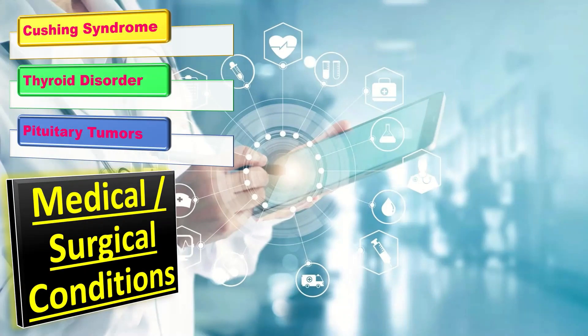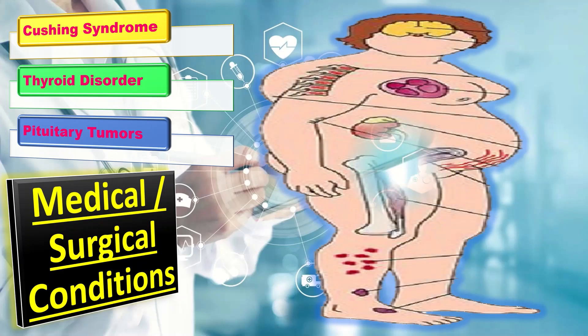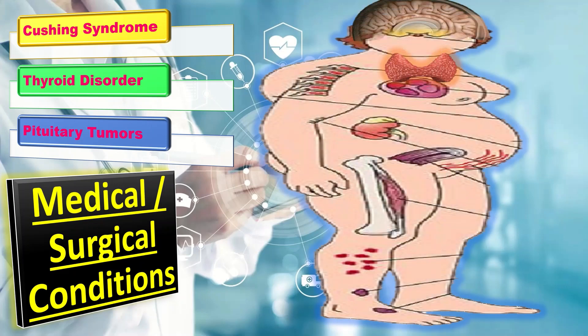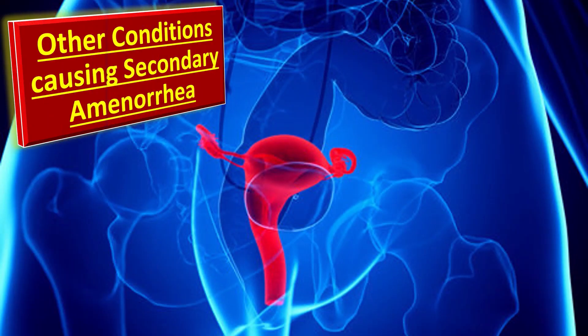What medical and surgical conditions cause secondary amenorrhea? Those include Cushing's syndrome, thyroid disorders, and pituitary tumors.